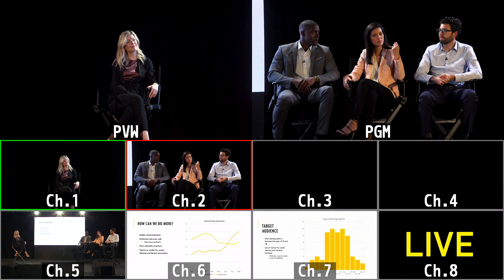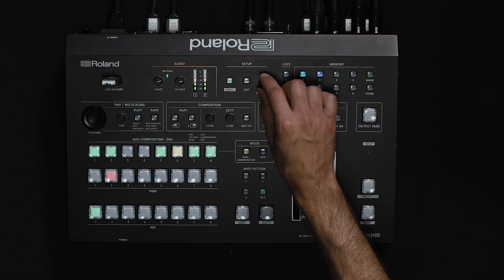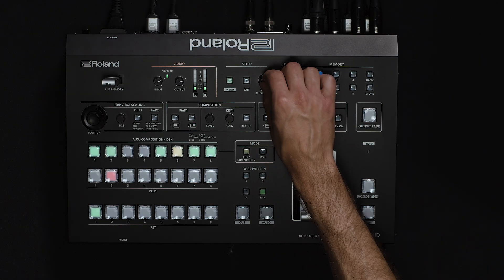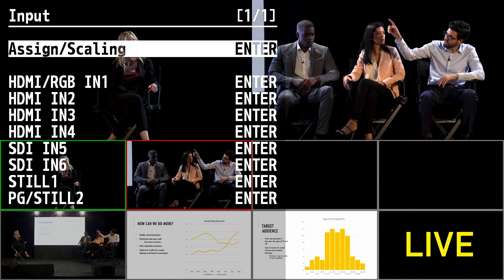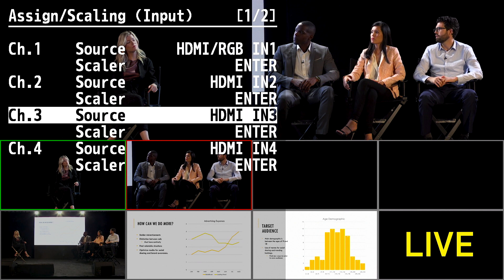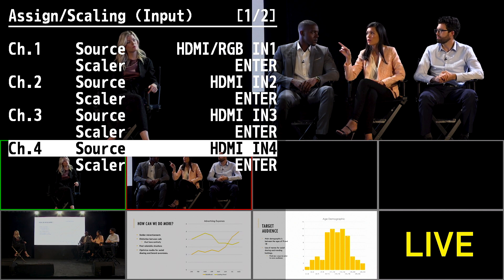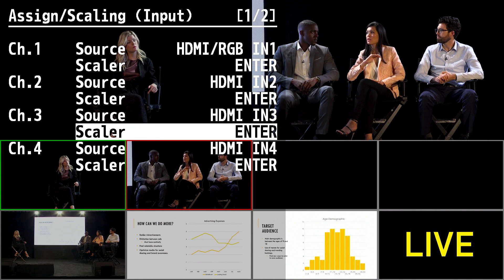Next, I'm going to show you how to assign a source to another channel for ROI. You can see on the multi-viewer that channels three and four are empty. Press the menu button, go into the Input menu, followed by the Assigned Scaling menu. Here you can see that channels three and four are set to their respective physical inputs.